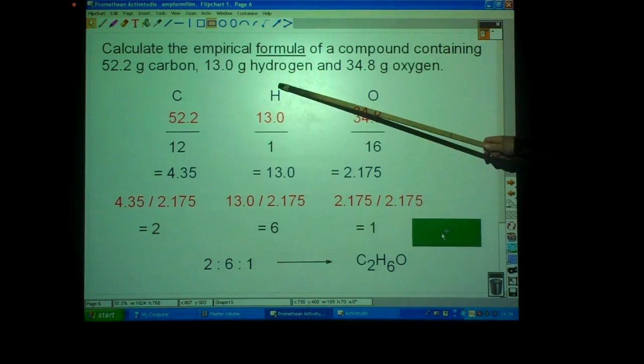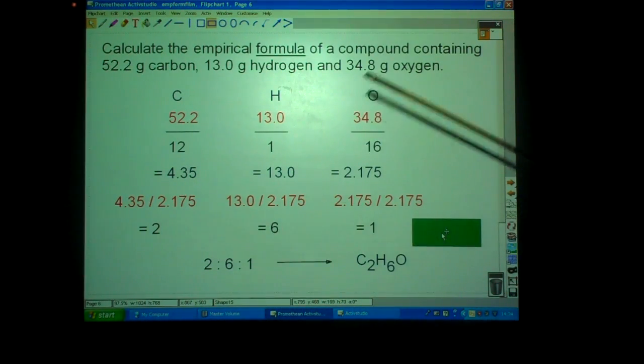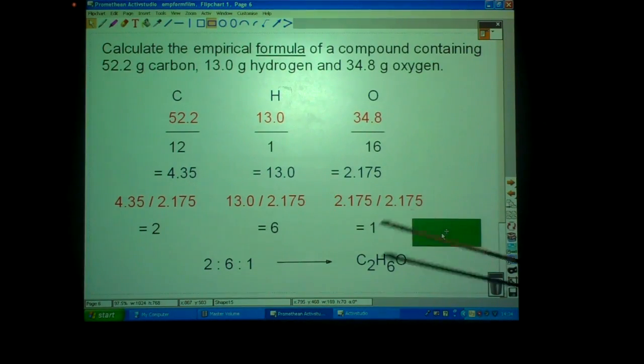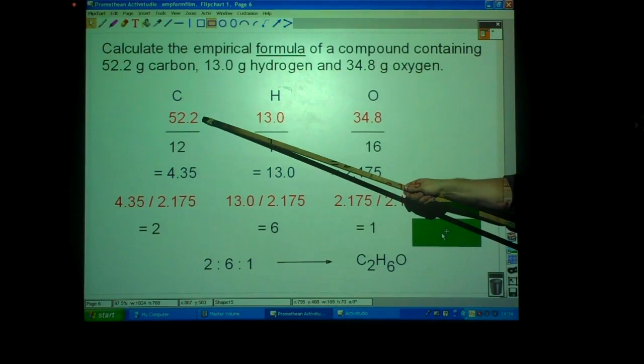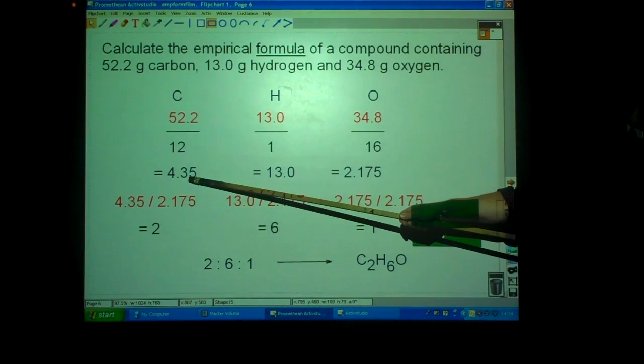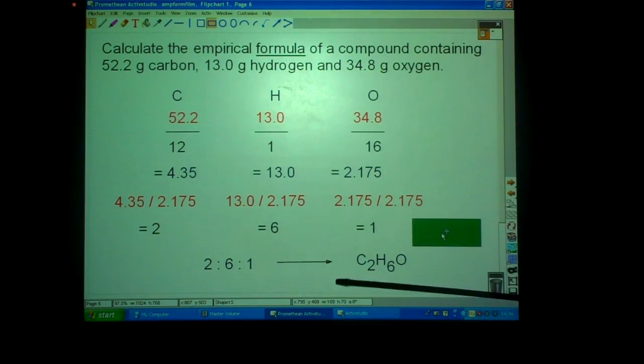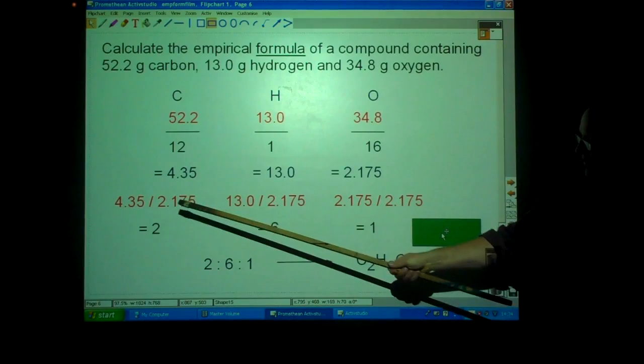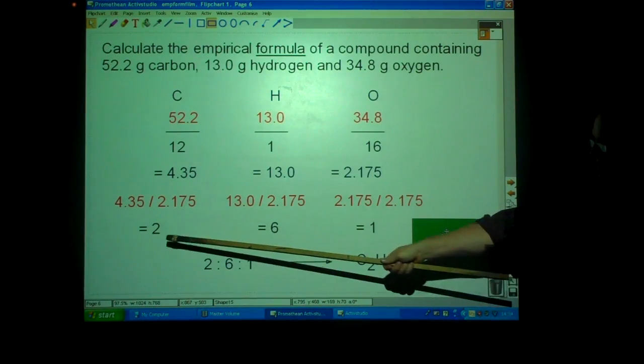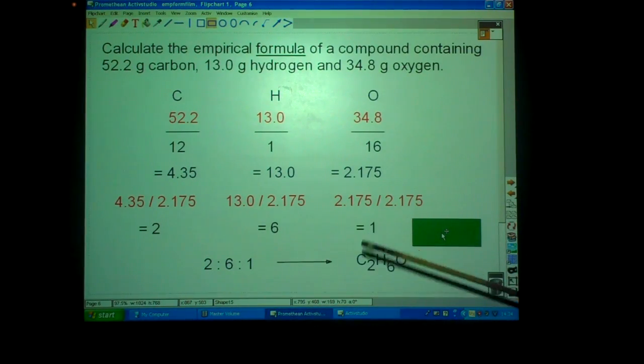So, 2 at the end of the carbon column, 6 at the H, 1 at the end of the oxygen. So, mass in grams divided by atomic mass. Get the answer. Do it for all the elements in the compound. Take the answers, divide each by the smallest and you will end up with a nice set of whole numbers. Don't forget to write the formula for the last mark.